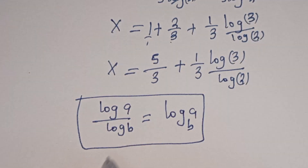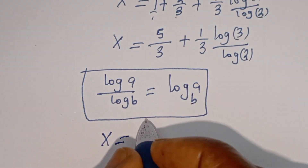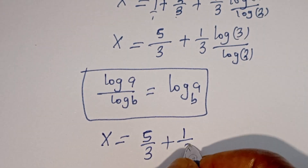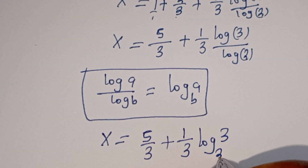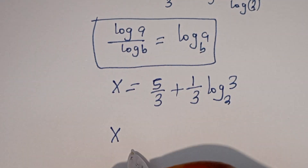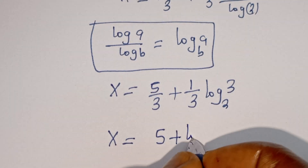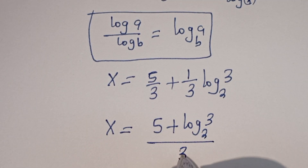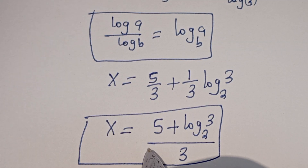Then all of this can be written as s is equal to 5 divided by 3 plus 1 divided by 3 times log 3 base 2. Then the final answer can be written as s is equal to 5 plus log 3 base 2, all divided by 3. This is the value of s.